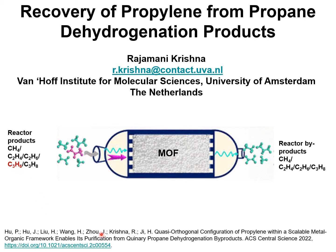The typical compositions of the mixtures exiting the propane dehydrogenation reactor consist of 1 to 3% methane, 0.5 to 6% ethane, 0.2 to 5% ethylene, 40 to 45% propane, and 42 to 50% propylene.